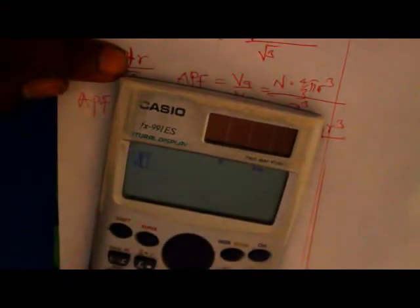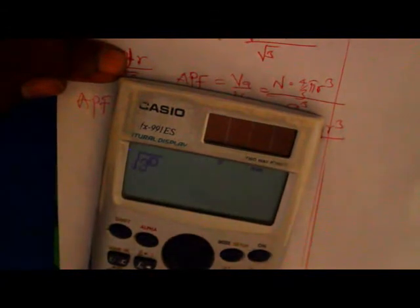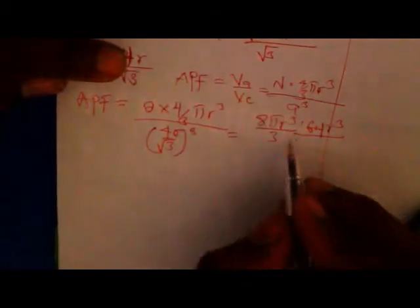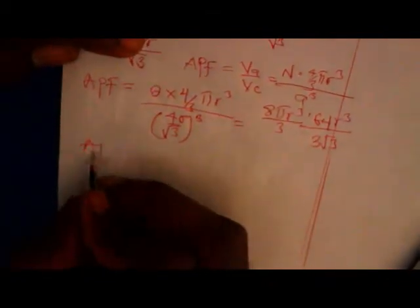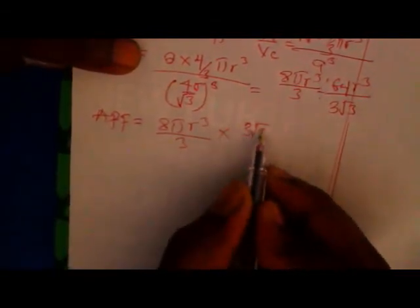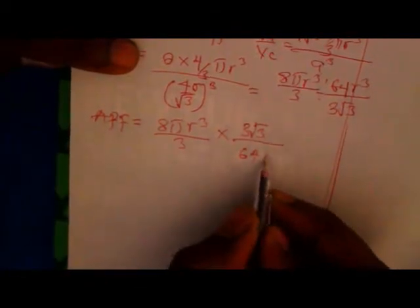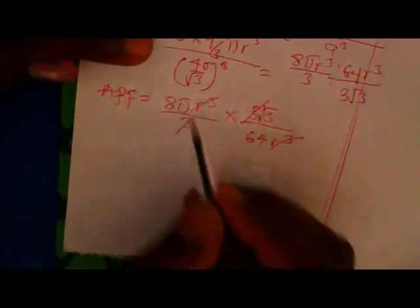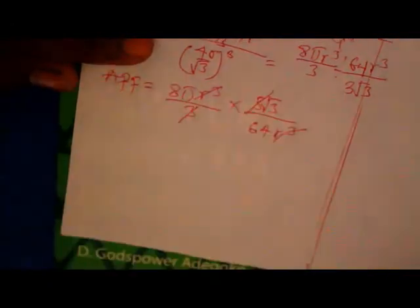Three root three, three root three. Then you can now see atomic packing factor is equal to eight pi R cubed over three, times three root three over sixty-four R cubed. From here, three goes with three, and R cubed goes with R cubed. Eight into sixty-four is eight. And we can now see pi times root three over eight.